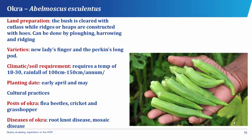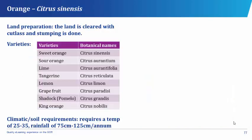The pests that attack okra are the flea beetles, the crickets, and the grasshopper, while the diseases suffered by okra are the root knot disease and the mosaic disease.